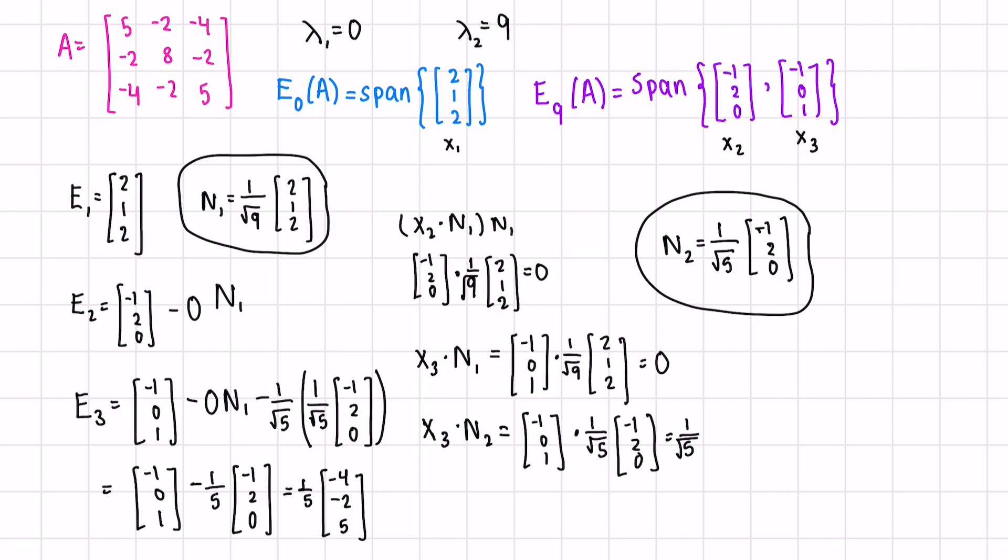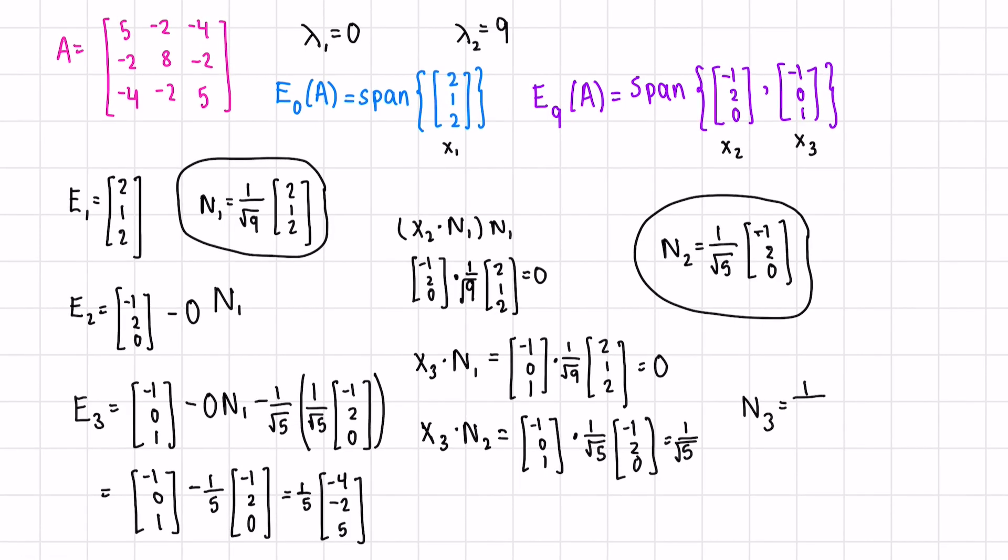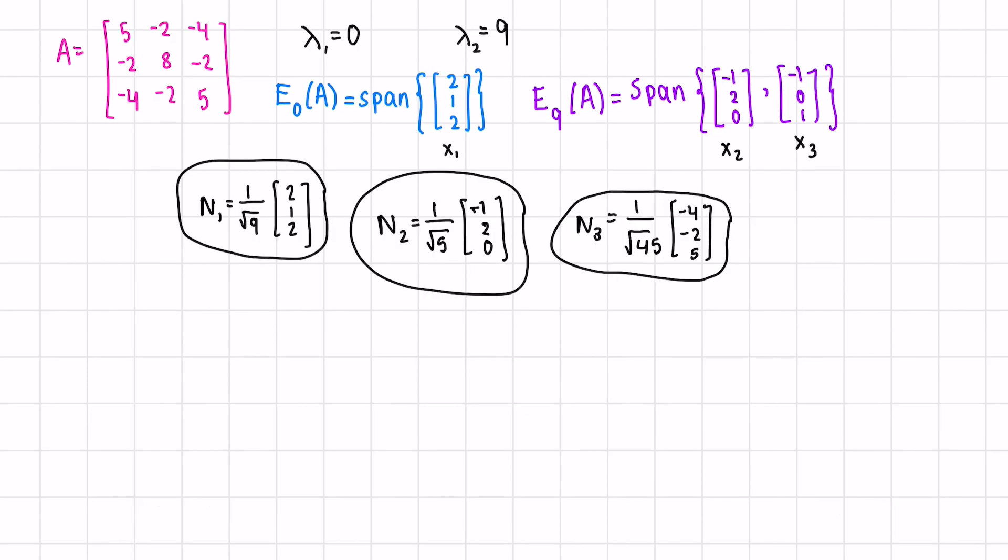Now we can normalize this. 1 over the norm would be 1 fifth times root 4 squared plus 2 squared plus 5 squared times the vector e3. And now we found n1, n2, and n3. These are now orthonormal vectors that span the eigenspace of A.